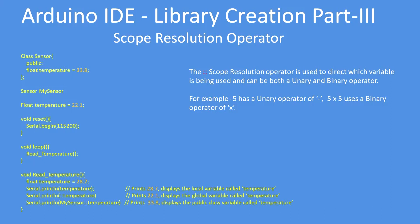In the function readTemperature we can print the local variable as normal — it will print 28.7. Then we can use the scope resolution operator to print the global variable called temperature, and then the class value of temperature, because we've prefixed it with mySensor:: which is again the scope resolution operator — it says use my class to get the variable value.